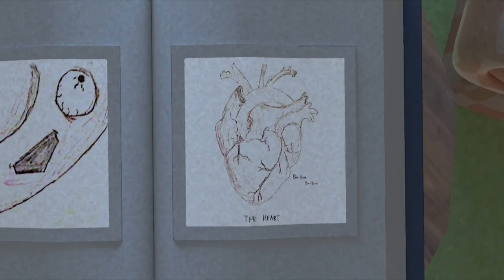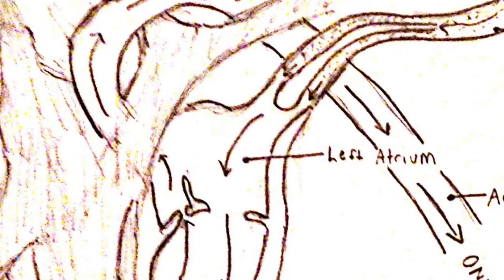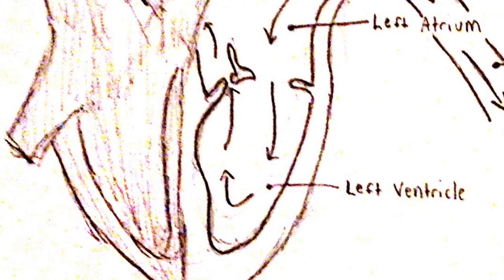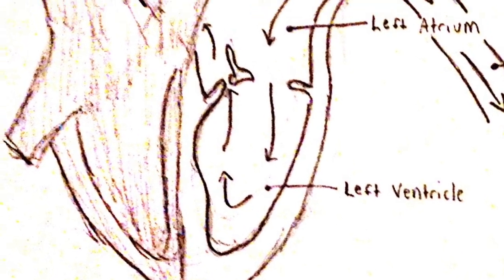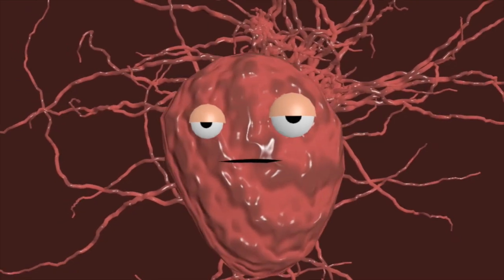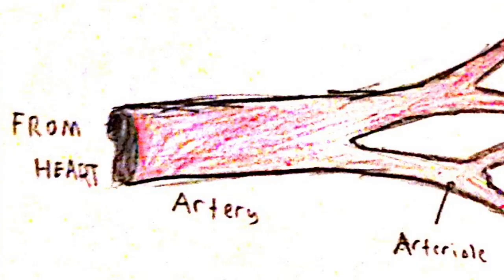The heart was a fascinating location. We entered the left atrium, flowed into the left ventricle, then as it contracted, were shot with terrific force out into an artery. Arteries are about the same size as veins, except they go away from the heart.